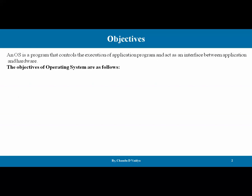So what are the different types of objectives available with the operating system itself? The very first objective is it provides a convenient way to use. The operating system provides convenience to the users — providing convenience to users is what the first objective of the operating system, which relates to the user interface.